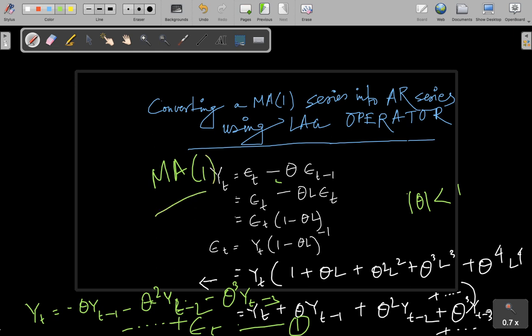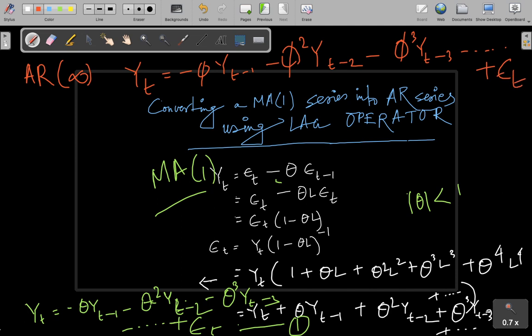Now if I write down an AR(1) series—sorry, an AR series of infinite order—how would it look like? Let me use a different color for my AR infinity series. That will simply be Y_t = -φY_{t-1} - φ²Y_{t-2} - φ³Y_{t-3} and so on, and you add the innovation or the error term for that particular time period.